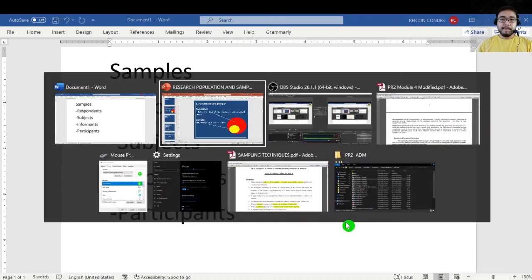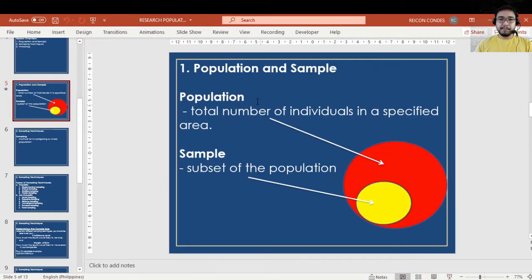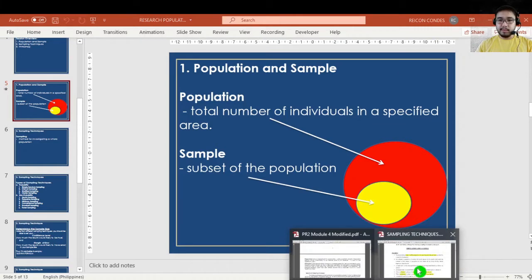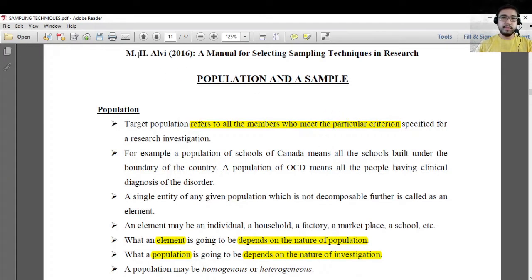Going back, let's discuss first what's population and what's sample. I'll be sharing with you a very good resource from MHLV 2016, a manual for selecting sampling techniques in research. Population refers to all the members who meet the particular criterion in your research.